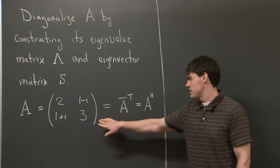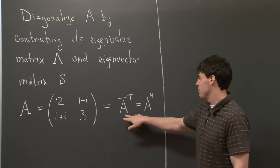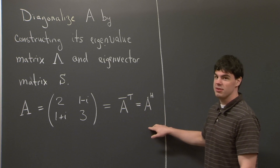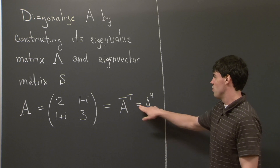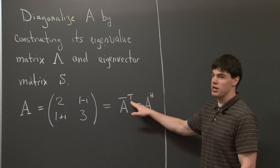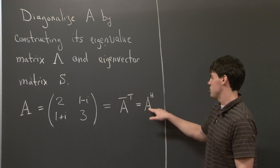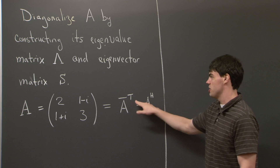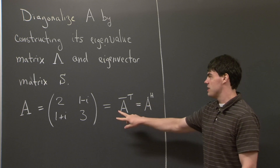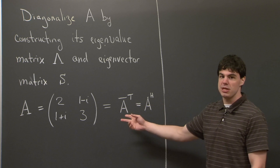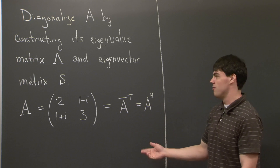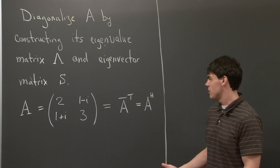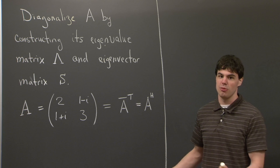One thing to note about this matrix A is that if we take its conjugate transpose, it's actually equal to itself. In Professor Strang's book, he combines this notation to be superscript H to mean conjugate transpose. So if you take the transpose of this matrix and then conjugate all the elements, you find that A equals its conjugate transpose. We call this property Hermitian.